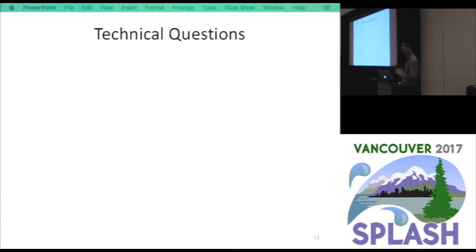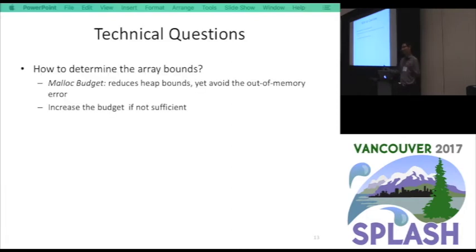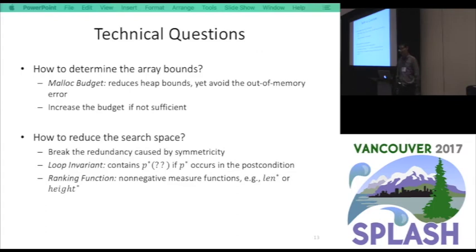That's the high-level idea. We managed to tackle a lot of technical problems. For example, the array size could be tricky. If it's too large, it's not solvable in practice. If it's too small, it's not sufficient. For example, if you do some malloc, you will run into some cases that you have out-of-memory problems. We come up with something called malloc budget. Basically, it's just an estimation. You start from a small number. As long as it's sufficient, then we go with that budget. Otherwise, we increase the budget incrementally.